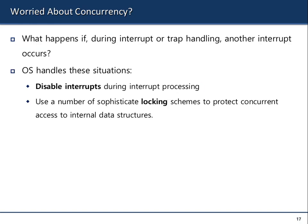Concurrency: what happens if during interrupt or trap handling, another interrupt occurs? For example, a process is making a syscall, and then a timer interrupt is triggered, or another process also triggers an interrupt. That is the problem of concurrency.